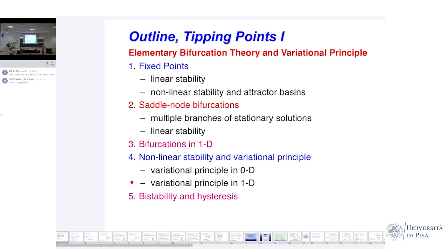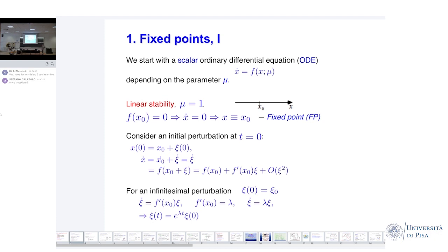Now I'm very straightforward with math. We start with a scalar ODE: x-dot — ODE dot is a time derivative — equal to f of x, the variable, and mu, the parameter. The linear stability analysis starts with x-zero where the right-hand side is equal to zero, so x-dot is equal to zero — it does not move there. This is called a fixed point in the dynamical systems language.